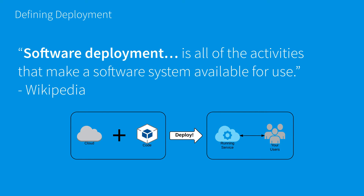We take a cloud that's empty and has no logic in it, add our code — which is our logic — run a deploy, and then we are presented with a running service that your users can use. So very simply: cloud plus code, deployed, gives you a running service. This may seem like a very basic representation of how we do a deployment, but this is important for how we will rethink how to do deployments as we move into more advanced automation.